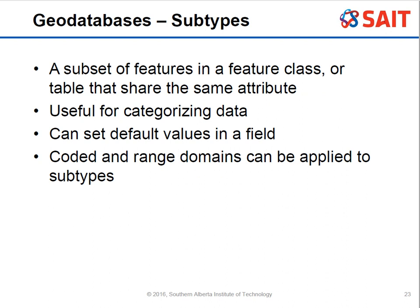Subtypes are another type of information in geodatabases — a subset of features in a feature class or table that share the same attributes. For example, you could pull all features from a large table that have a particular road type, like a four-lane highway, creating a subtype. It's great for categorizing data on your map. It also allows you to set defaults in a field to prevent empty cells, and you can apply coded and range domains to subtypes as well to limit errors.